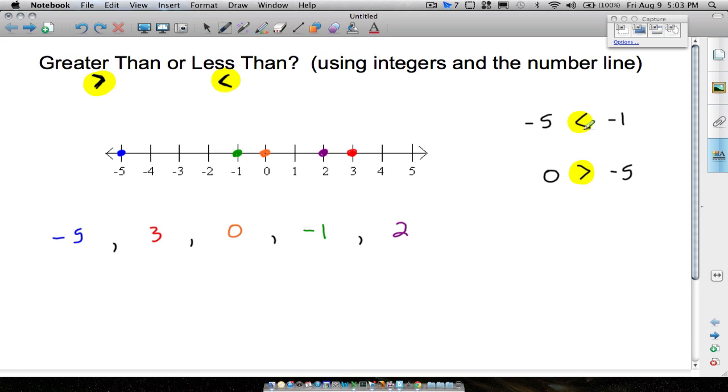Up here, we can read this one as negative five is less than negative one. And again, the whole idea behind this, the further you go to the right, you get bigger. The further you go to the left, you get smaller.